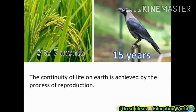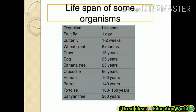The continuity of life on earth is achieved by the process of reproduction. Reproduction is such a process by which we can exist on earth. Here is a list of life spans of some organisms. You can remember it or take a screenshot — this will be helpful for your examinations, medical entrance examinations, or other state board examinations.